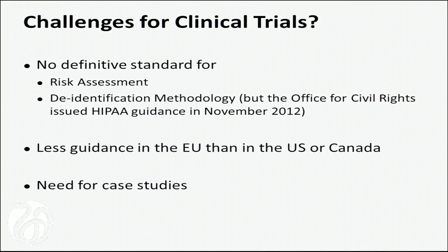To wrap up: there is no definitive standard for a risk assessment in this field, and that's a problem. There is no agreed-upon de-identification methodology. OCR put out guidance in November 2012 — they didn't issue policy but provided a list of strategies deemed useful. There is less guidance in the EU than in the U.S. or Canada, and the EU and Australia tend to look at what we do before issuing their own guidance. The ICO's Code of Practices for Anonymization report from the U.K. is worth reading. Most importantly, we need case studies and illustrations of what data has been useful for, and what utility functions to consider. Otherwise, we're just de-identifying in the dark and might remove the wrong things.